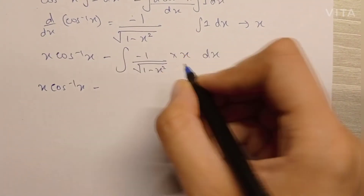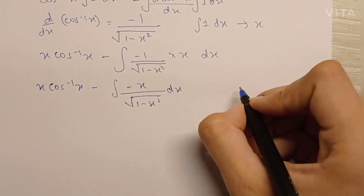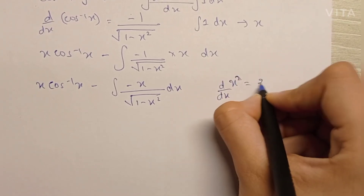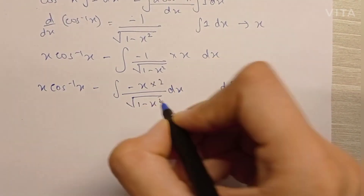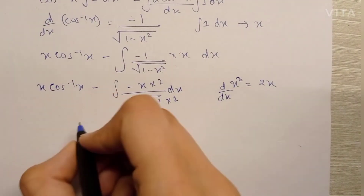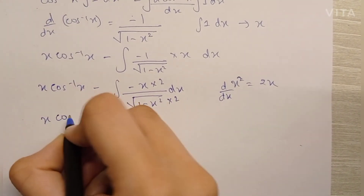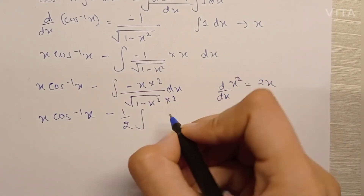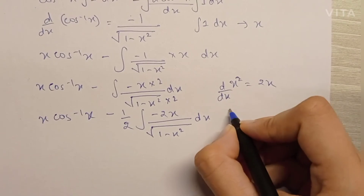Now we'll use the substitution method of integration. We can write this as minus x upon root of 1 minus x squared dx. We know that the differentiation of x squared is 2x, and I can see an x in the numerator. So if I multiply and divide the numerator and denominator by 2, I'll have 2x in the numerator. I can take 1 by 2 outside as a constant, keeping minus 2x upon root of 1 minus x squared dx inside.